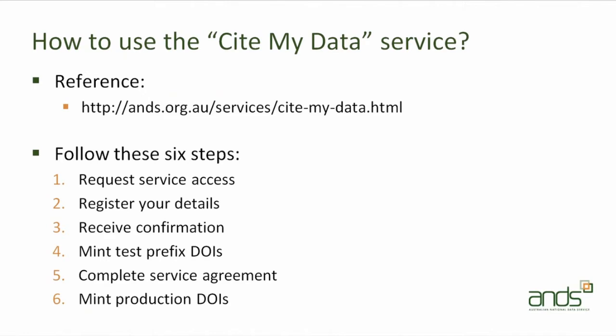Steps one, two and three are effectively administrative steps with some back and forth with usage agreements and you providing us with some technical details so we can give you access to the service. Step four is effectively your data citation P-plates — many people will have functional and unit tests on their research data software that they'll want to run, and you don't want to do that with production DOIs or production services, so we do run a test prefix service. Once you've successfully gone through your P-plates, it's on to step five, which is another final administrative agreement. And finally, in step six you've got your open licence and you're ready to start minting full production DOIs.